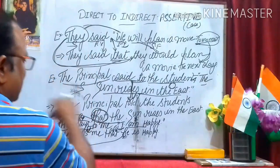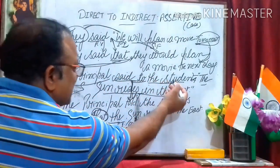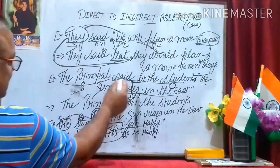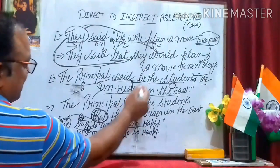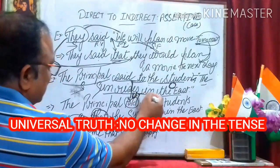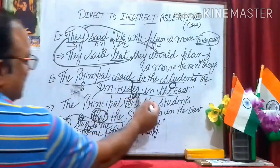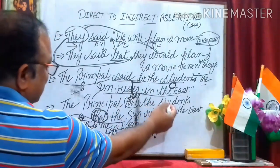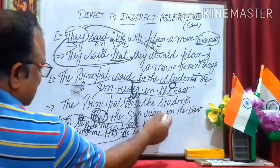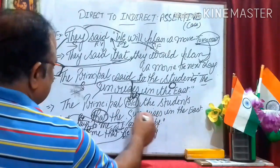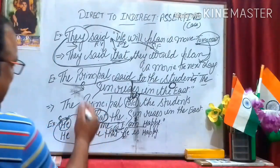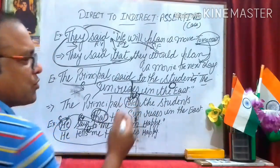Let's consider one more example: 'The principal said to the students, the sun rises in the east.' Here 'the principal' is the subject, 'said to' changes into 'told', and 'the students' is the object. 'The sun rises in the east' is a universal truth, so the tense does not change. The final indirect speech is: 'The principal told the students that the sun rises in the east.'